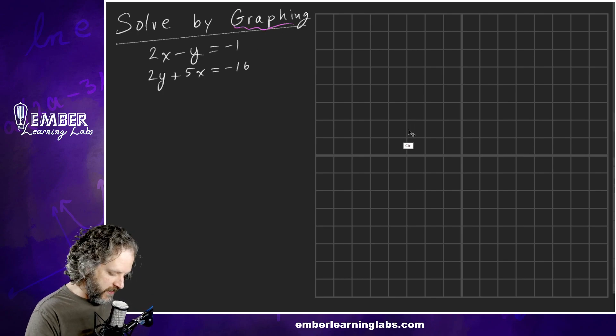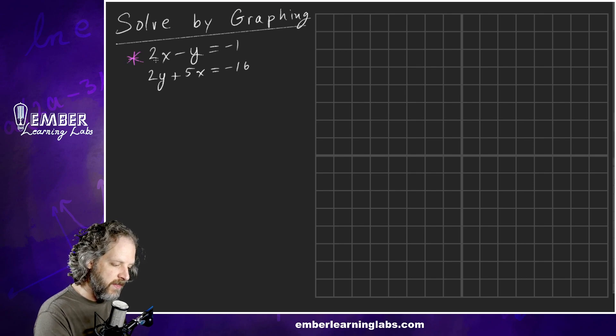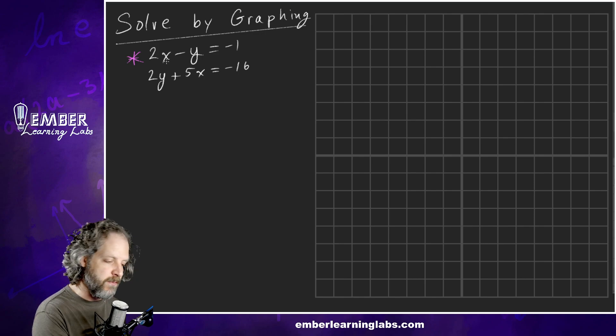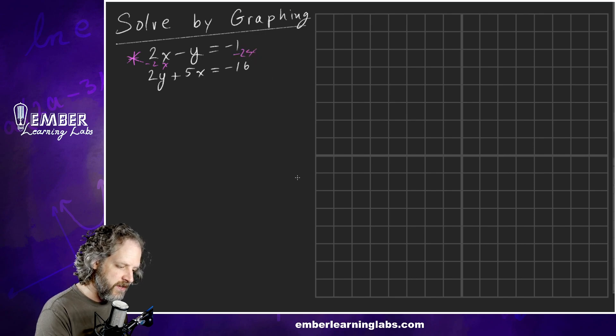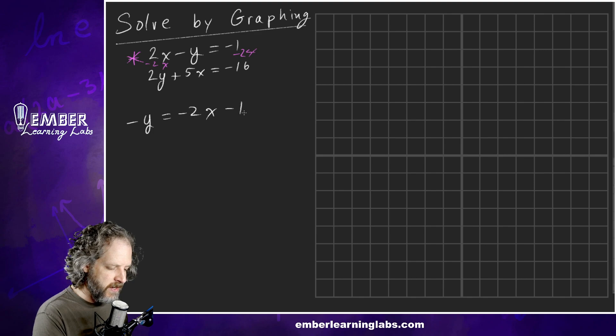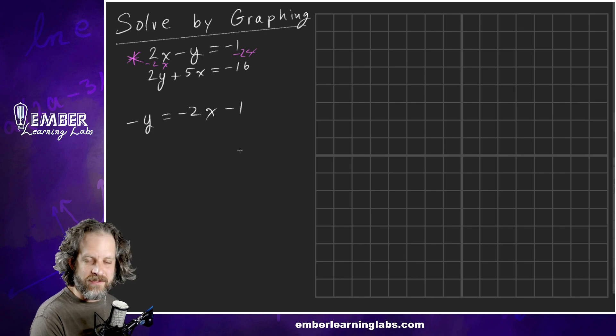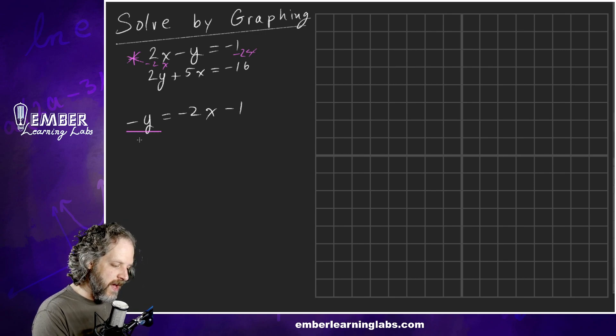So we're going to solve by graphing. We're going to graph each one of these things. Let's start by graphing this guy. How are we going to graph this? We're going back to the last chapter. We need to get this in slope-intercept form. So we need to start by solving for y. We're going to subtract that 2x from both sides, minus 2x, minus 2x. And then we end up with negative y equals negative 2x minus 1. Now we've got a negative on it, so we're going to divide both sides by negative 1. So our first equation is y equals positive 2x plus 1.